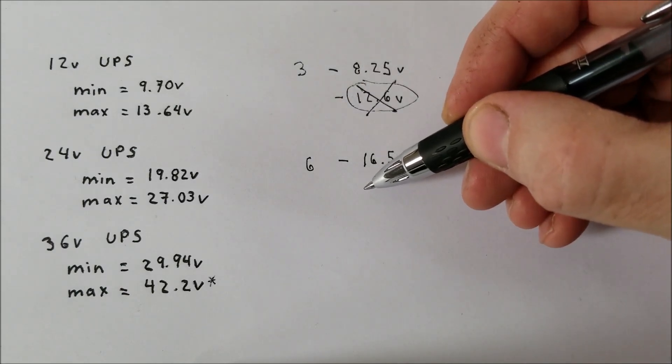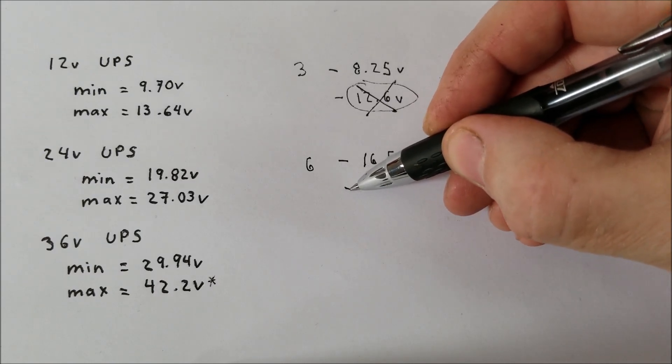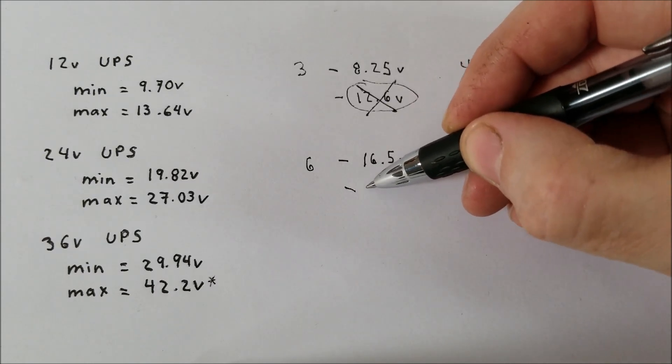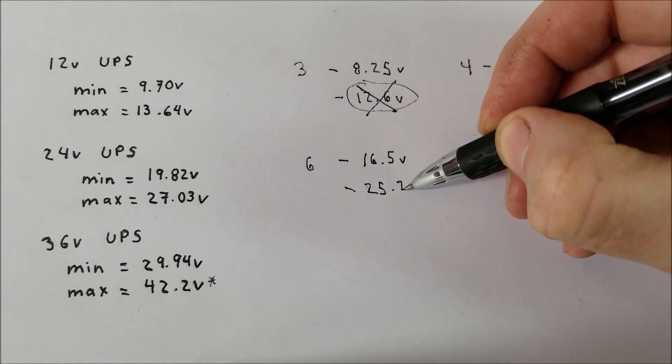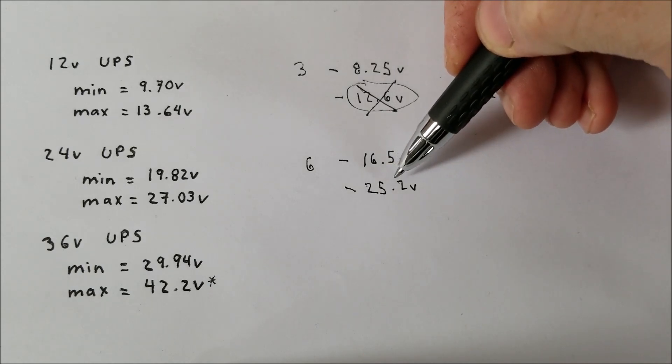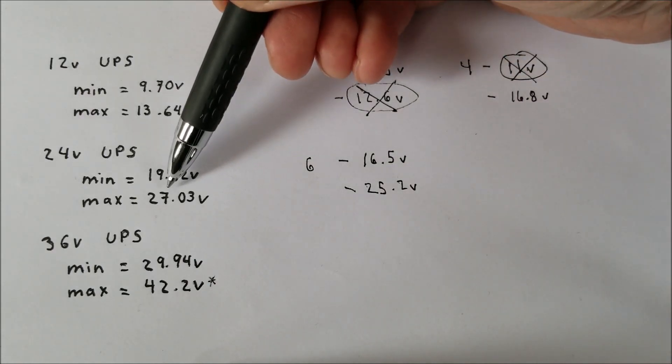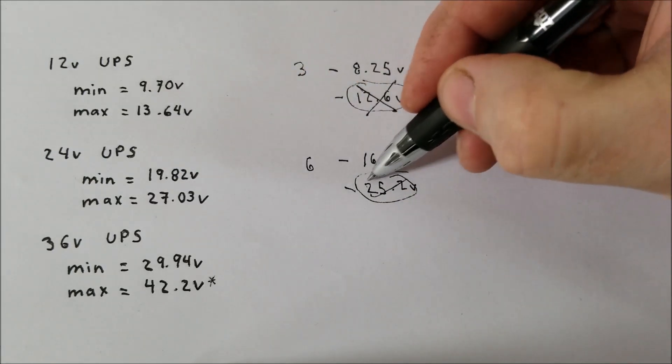Now if we do 4.2V for the maximum times 6, we get 25.2V. As you can see, this is a maximum that the cells can take. But the UPS goes all the way up to 27V. So this will not work. It's too high.